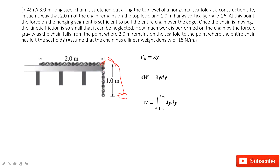For this part, the gravity — we can cut the chain into a lot of small fractions. The density is lambda (λ). Lambda gives you the linear density. Then lambda times the y position times the length gives you the gravitational force. For each small fraction, the gravity is λ·y·dy, and the distance it moves is dy. So for this small fraction, dW = λ·y·dy.